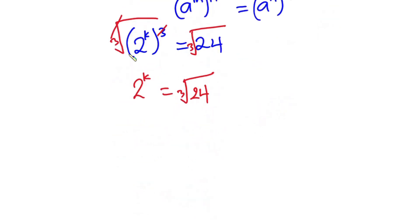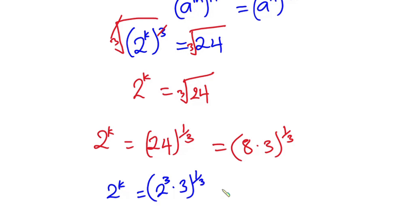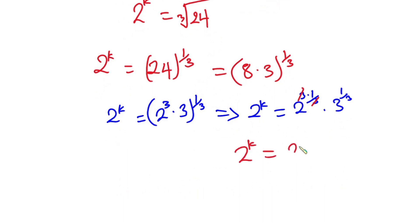We know 2^k, but we can simplify further. The cube root of 24 is the same as 24 to the power 1/3, which equals (8 times 3) to the power 1/3. Rewriting: (2^3 times 3) to the power 1/3, which gives 2^(3 times 1/3) times 3^(1/3). The 3s cancel, so 2^k equals 2 times 3^(1/3), which is 2 times the cube root of 3.